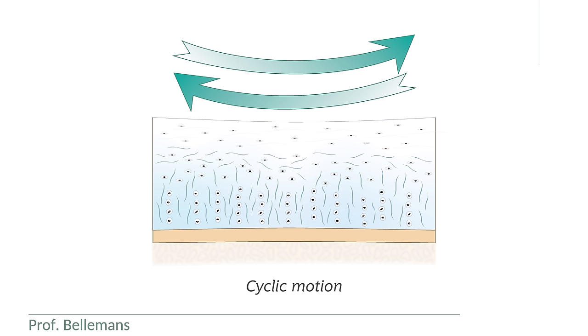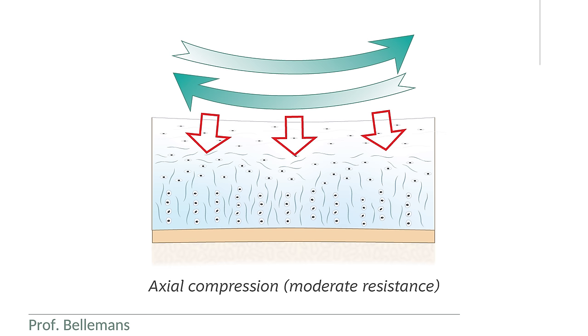So indeed, what cartilage cells like is cyclic, repetitive gliding motion. Then, these cells are stimulated to produce matrix and collagen, which become nicely aligned architecturally, especially in the superficial layers, where they provide a smooth gliding layer. This happens especially when the cyclic motion is combined with moderate, consistent axial pressure. That is ideal. Then we get a nice, strong and smooth cartilage gliding and protection layer.